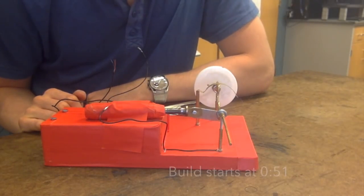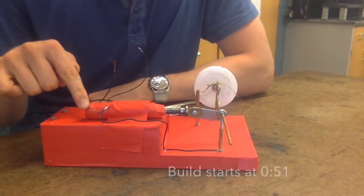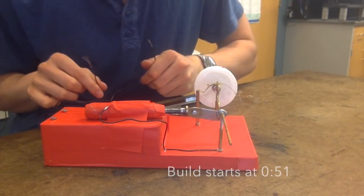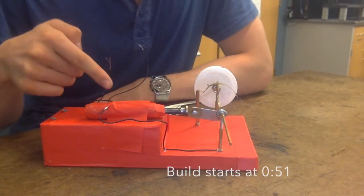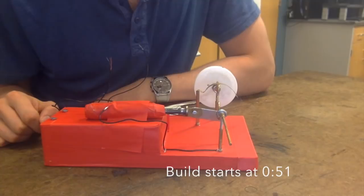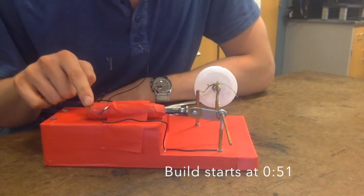Before we get started on the build, let's see how this works. The cylinder here is the solenoid itself. The leads are back here. When a current runs through the solenoid, it becomes an electromagnet, inducing a magnetic field.